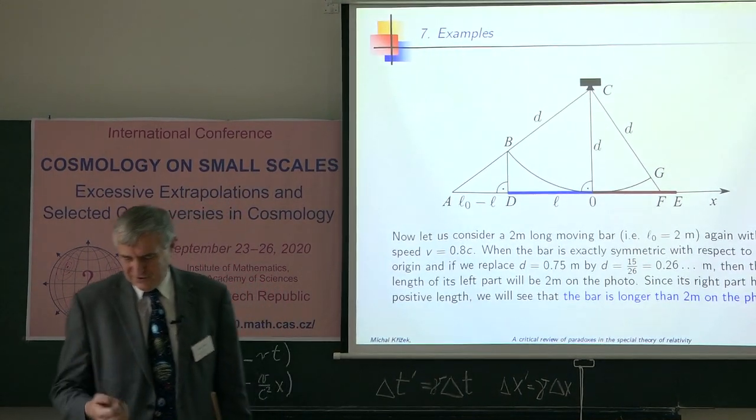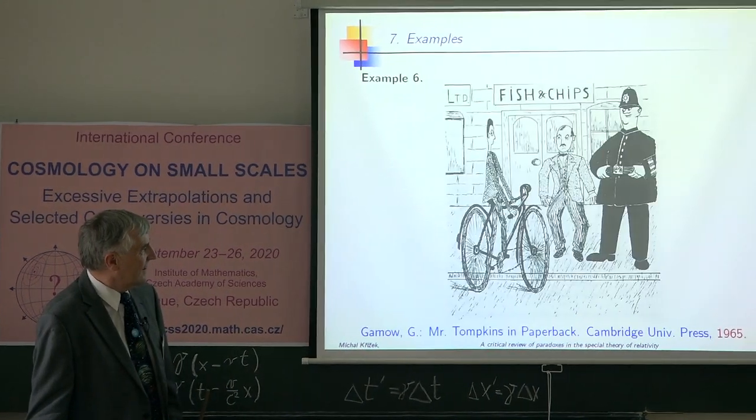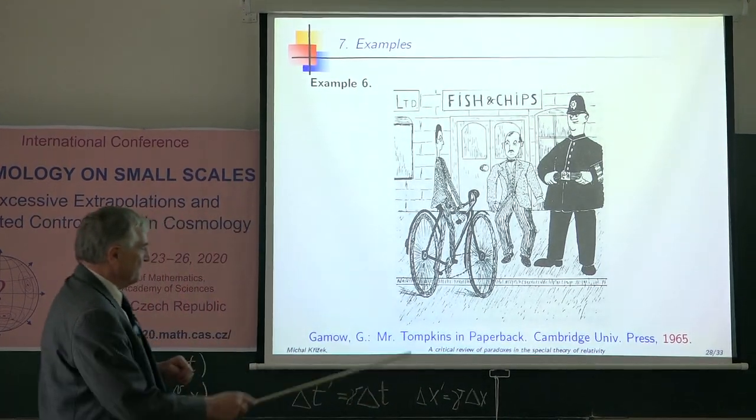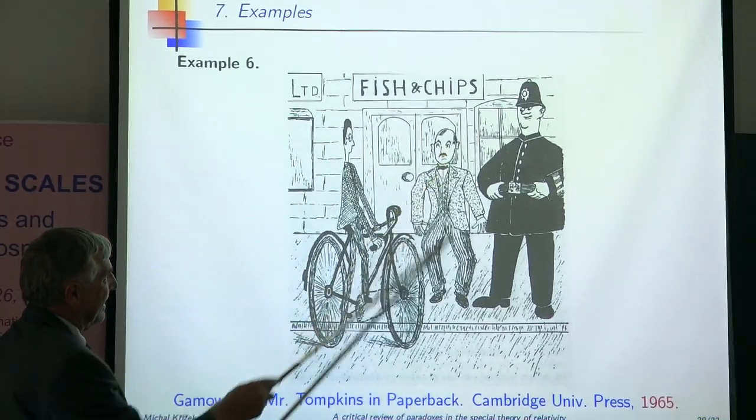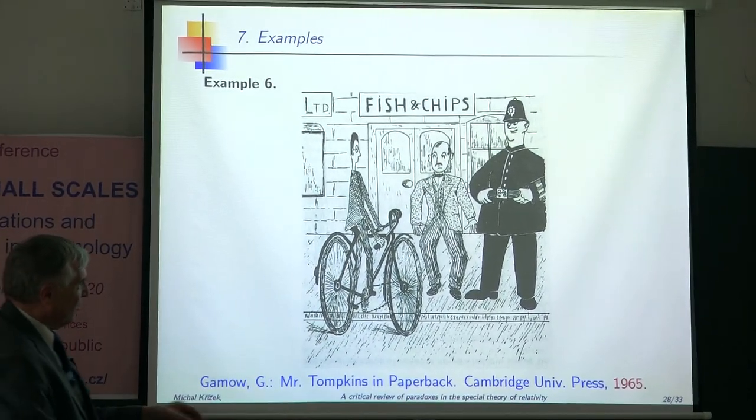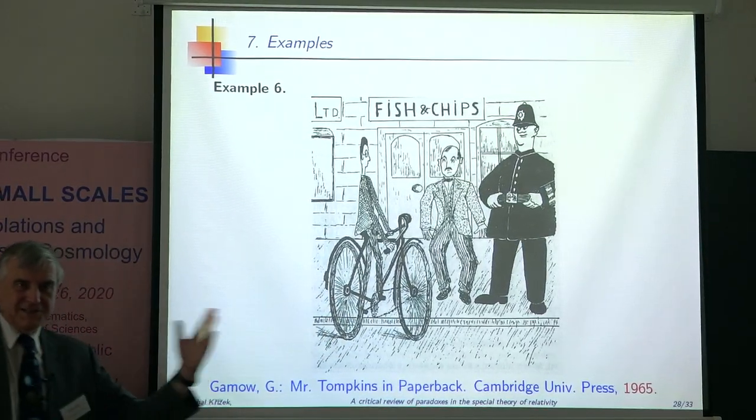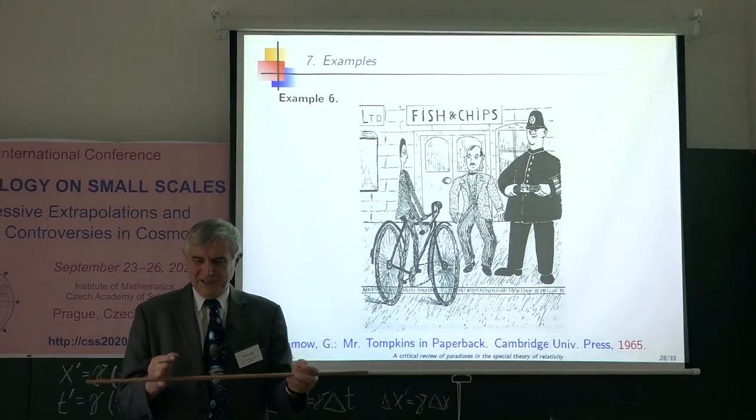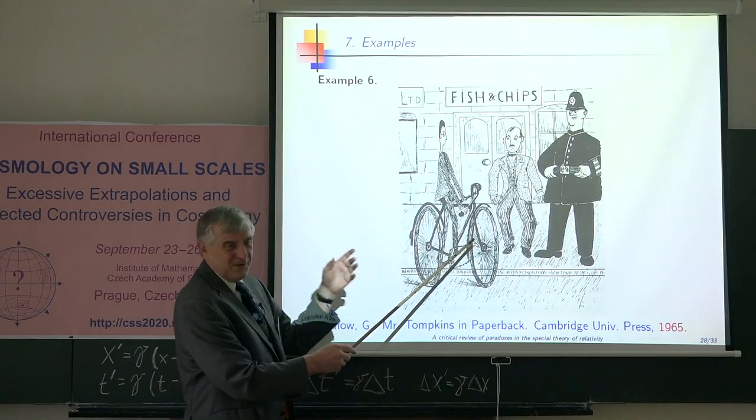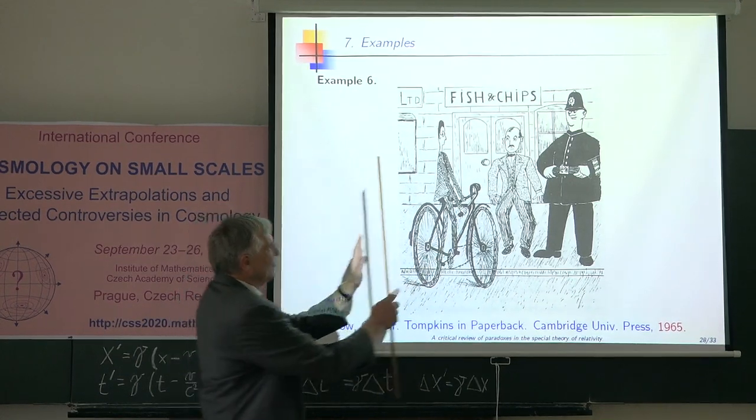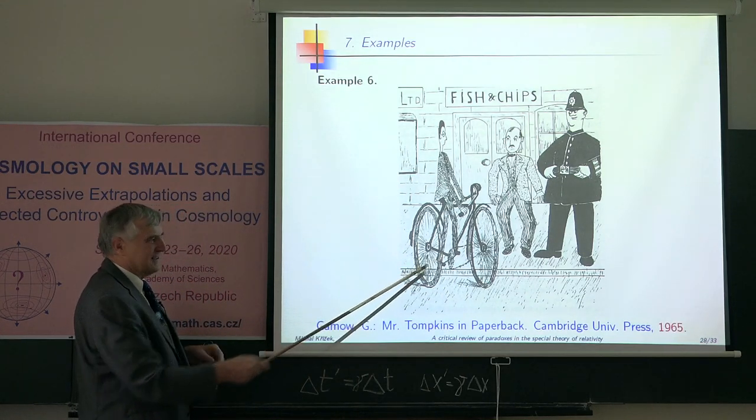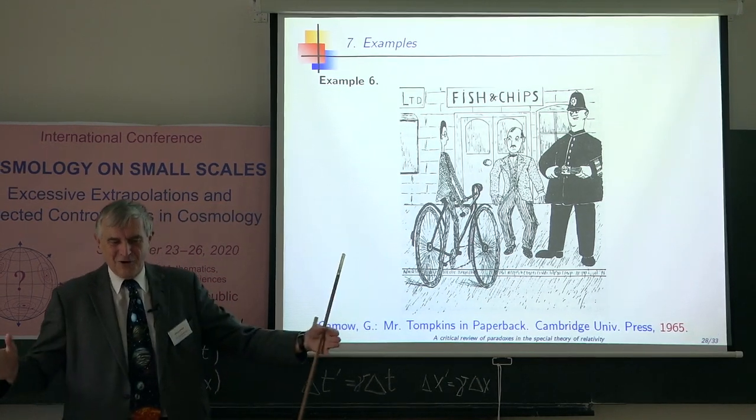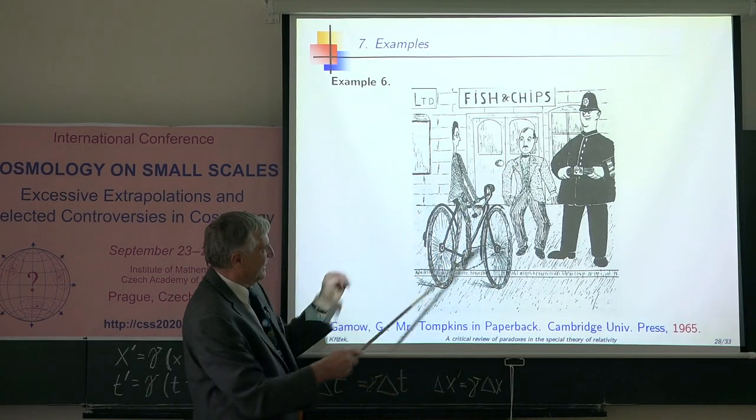This is another picture from the book by Gamow. This book and this gentleman, according to this formula, should see this bicycle reduced in this direction. But as I already told you, if you see bar which can be of the same size or even longer, if the speed is sufficiently high, you should see longer bicycle than that. My bicycle is 1 meter 75. You could see, for instance, 3 long meters bicycle on camera. This gentleman should see it, this girl.